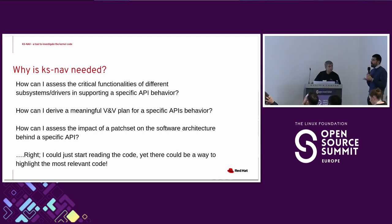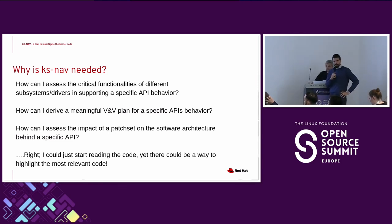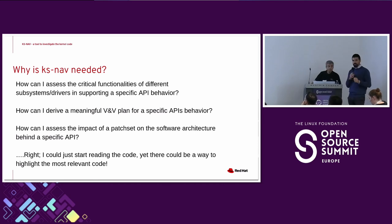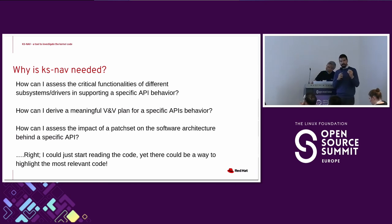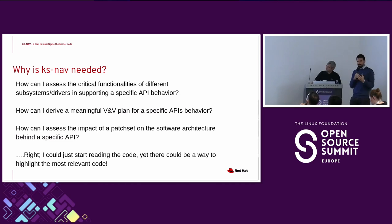Why do we need such a view? When you do a safety analysis, you need to understand what are the main subsystems and key functionalities provided by them in the context of a specific function you are analyzing. Also, when you write test cases and want to write a meaningful V&V plan, you may want to exercise more heavily the functionalities that are more critical for the end goal. Another reason could be in the context of CI/CD — the kernel is a continuously evolving beast. If there is a given patch set, how can you assess what is the impact of such a patch set in the context of specific functionalities?